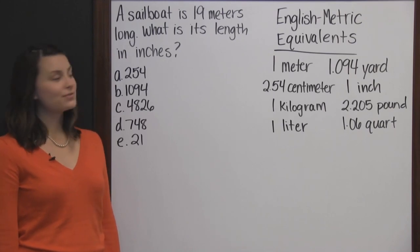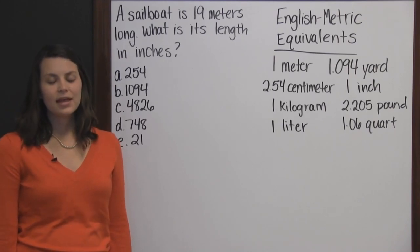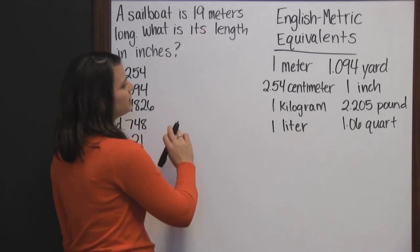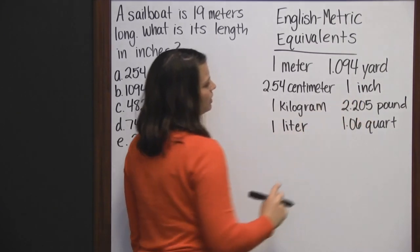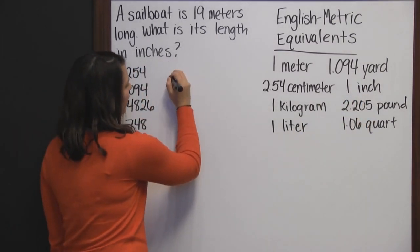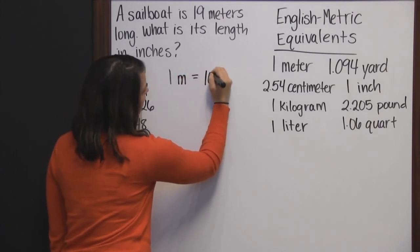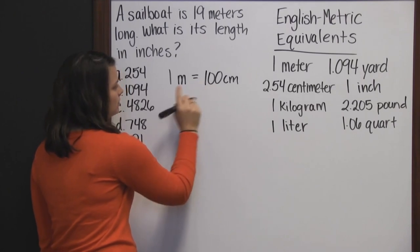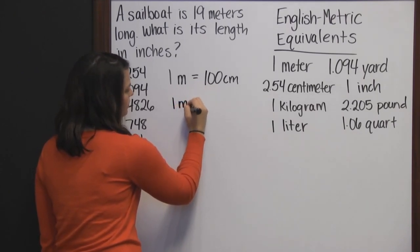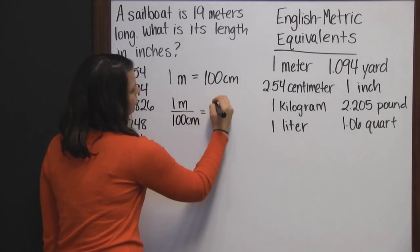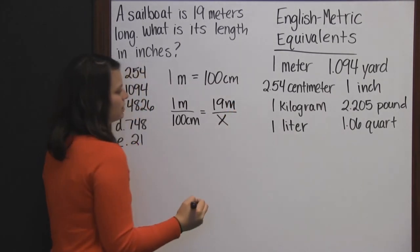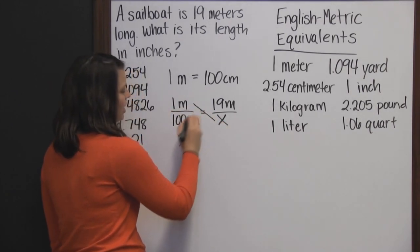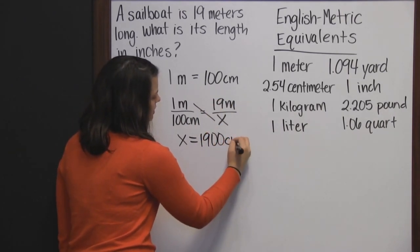A sailboat is 19 meters long. What is its length in inches? There are many ways to approach this problem. The first thing I'm going to do is convert my meters into centimeters, because then it's a quick conversion into inches from there. I know that 1 meter is equal to 100 centimeters. We can use a proportion to solve: 1 meter is 100 centimeters, which equals 19 meters is how many centimeters. Cross-multiplying: 1 times x is x, and 100 times 19 is 1900. So it's 1900 centimeters.